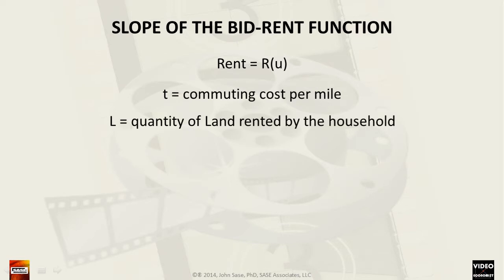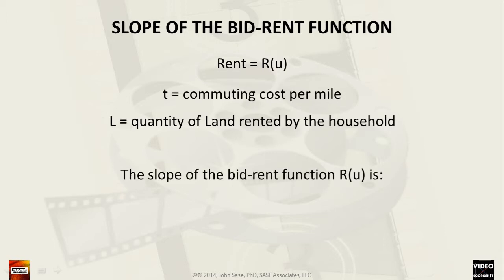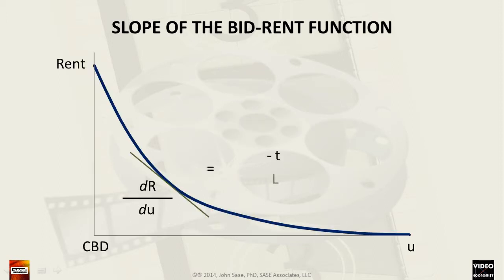We may also consider in this model that rent is a function of radial distance. The curvature of the function is affected by the commuting cost per mile and the quantity of land demanded by a household. We can express the slope of the bid-rent function as the first derivative taken in respect to the distance mu. This derivative can be identified as the inverse ratio of commuting cost to the quantity of land demanded. The slope of the bid-rent function is not constant; rather, it decreases at a decreasing rate.